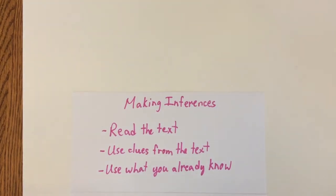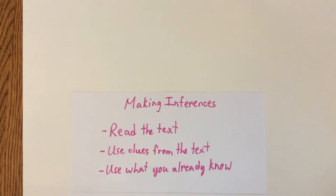We're going to be learning how to make inferences. Making inferences is trying to figure out some information that is not told to you while you're reading something. Here are some tips: first, you read the text, then use clues from the text to help you figure out information, and then use what you already know.